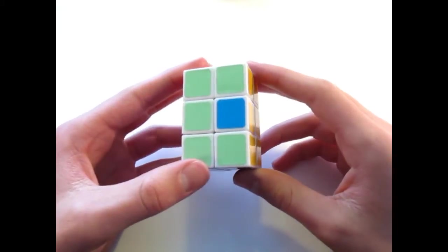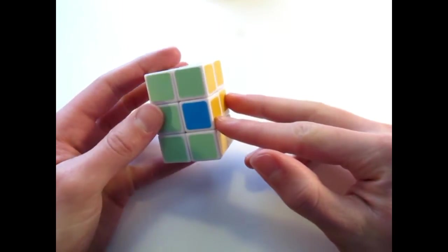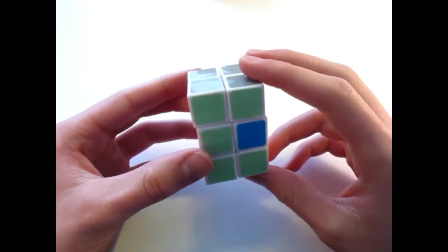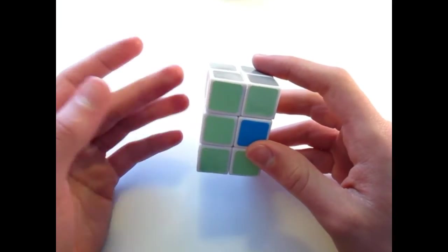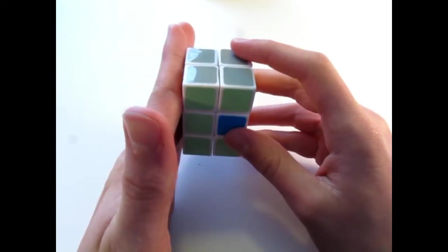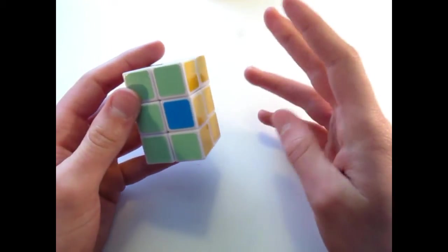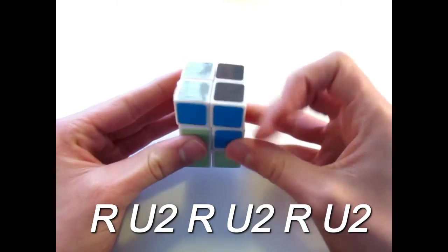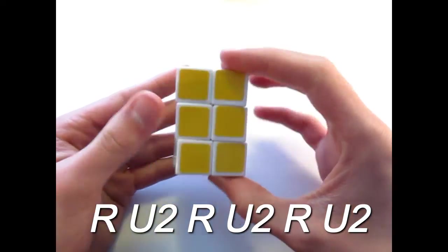You very well could have something that looks like this. This is actually a parity error to where these two edges need to be swapped. Now there is an easy algorithm to fix this. So you need to hold the solved side on your left and the two edges that need to be swapped on the right. And you perform this algorithm. r u 2 r u 2 r u 2. And there, that's all of the algorithms. Easy puzzle.